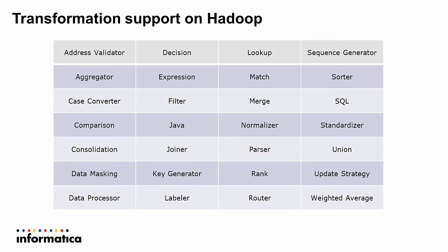Regarding transformations supported on Hadoop, the full list is documented and you are encouraged to review it, because there are different ways to configure these transformations and they may have limitations in how they process on Hadoop. The limitations are typically on the Hadoop cluster side, not necessarily with Informatica itself — and the same applies to Spark and Blaze. Review the documentation carefully.